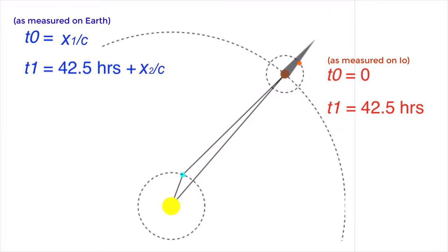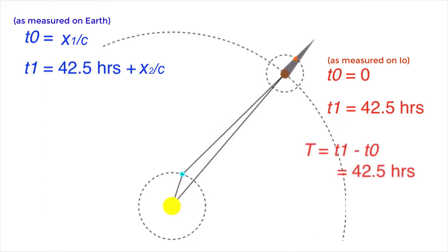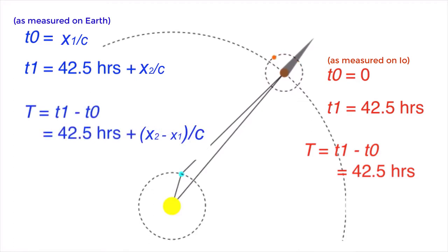So the time of orbit as measured on Io is this, t1 minus t0, it's 42.5 hours. And the time of orbit as measured on Earth is 42.5 hours plus x2 minus x1 all on c.